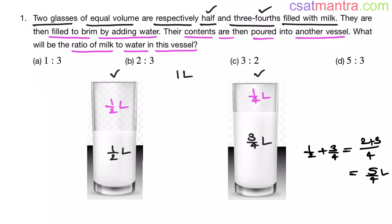Now how much water is there in these two glasses? Half plus one by four, this is three by four liters. So we have five by four liters of milk and three by four liters of water. So when they poured into the vessel, the ratio of milk to water will be five by four to three by four. Four four gets cancelled, this is five is to three.